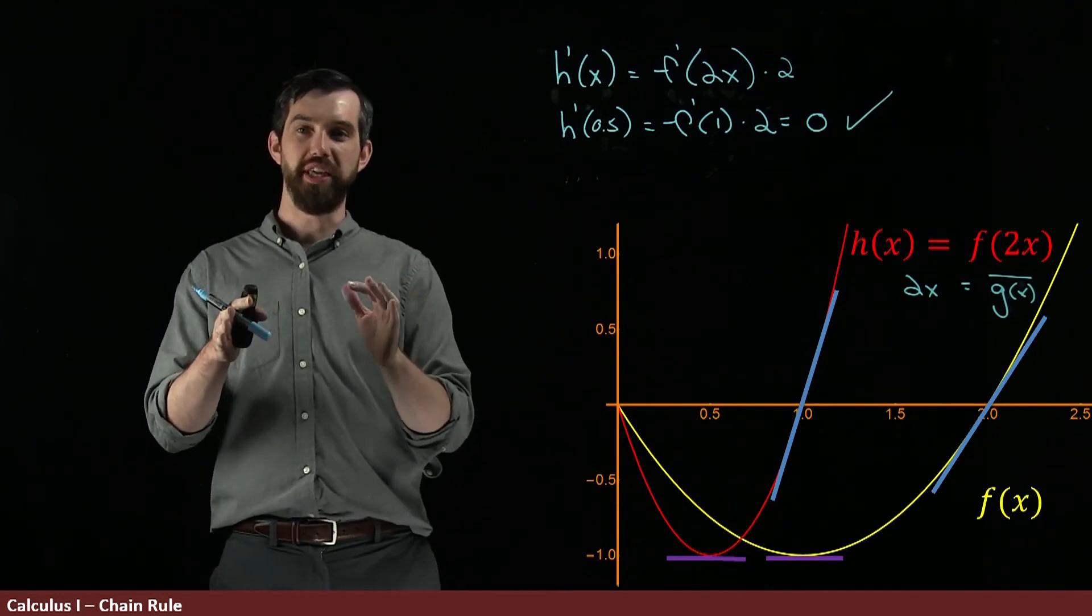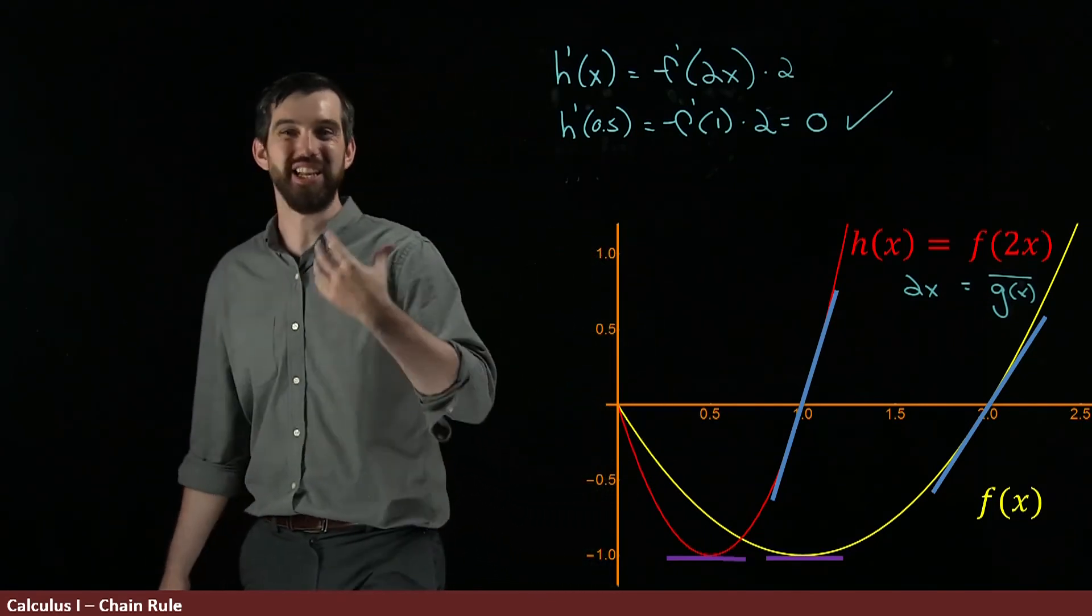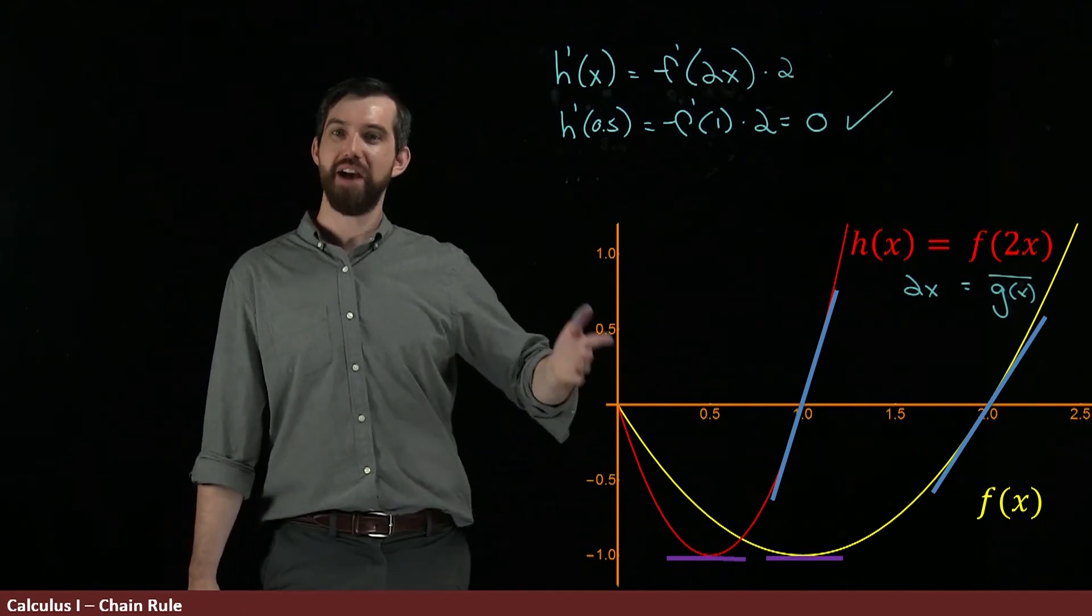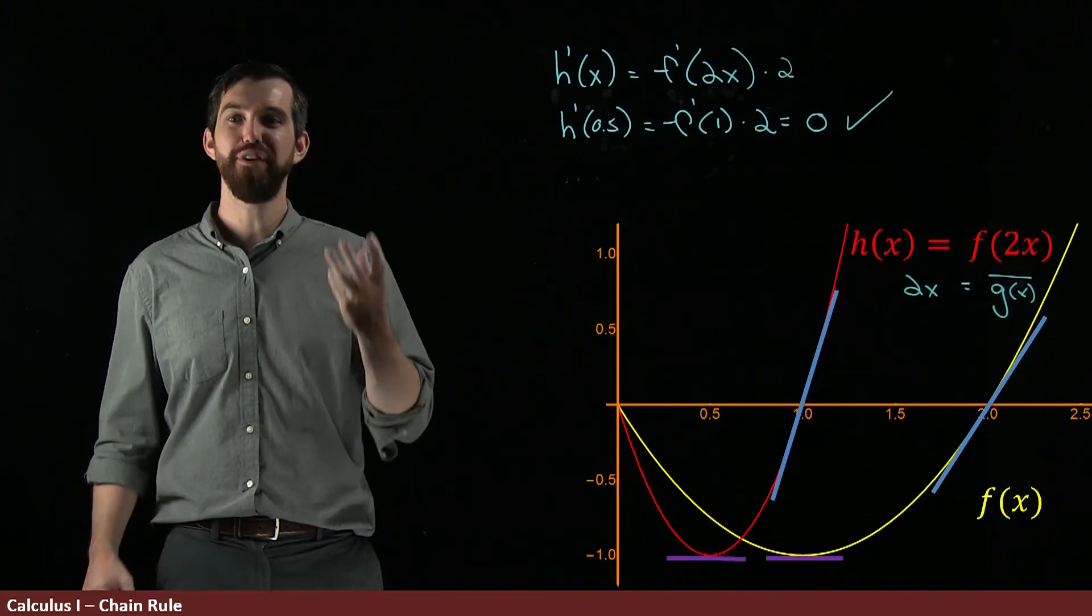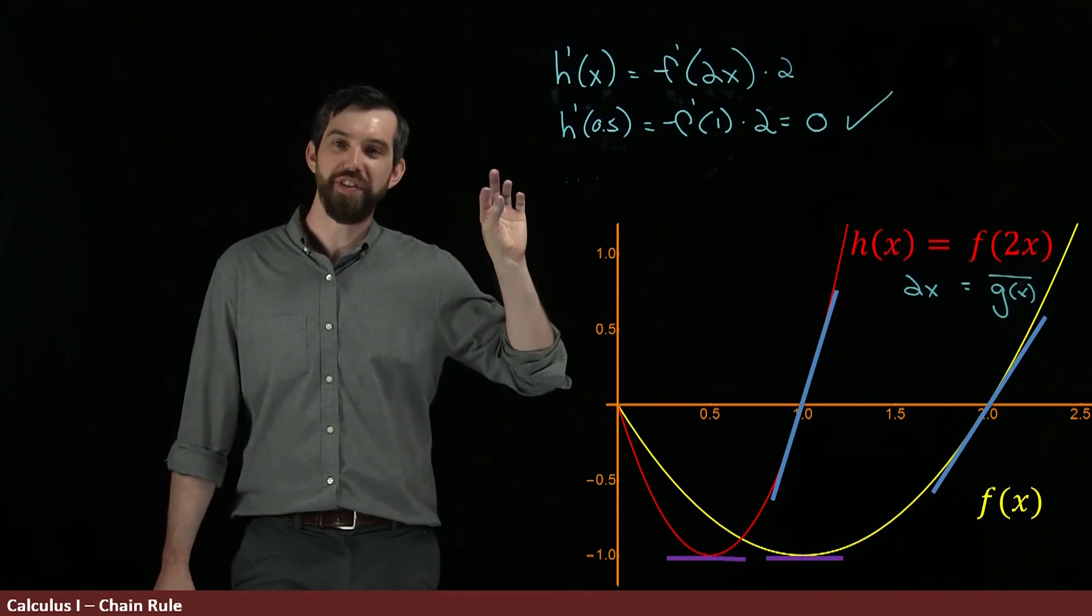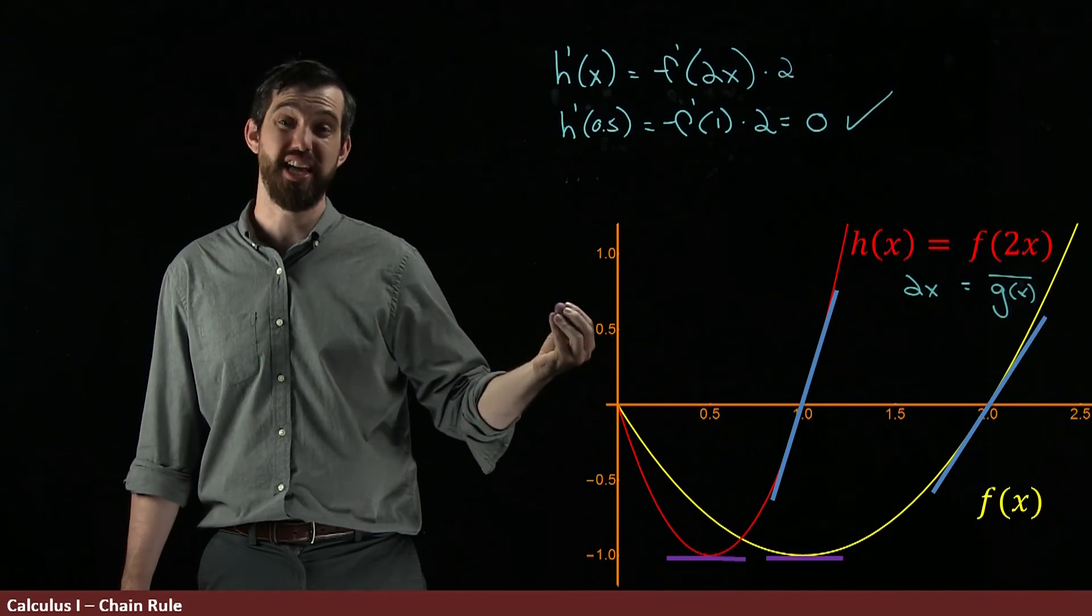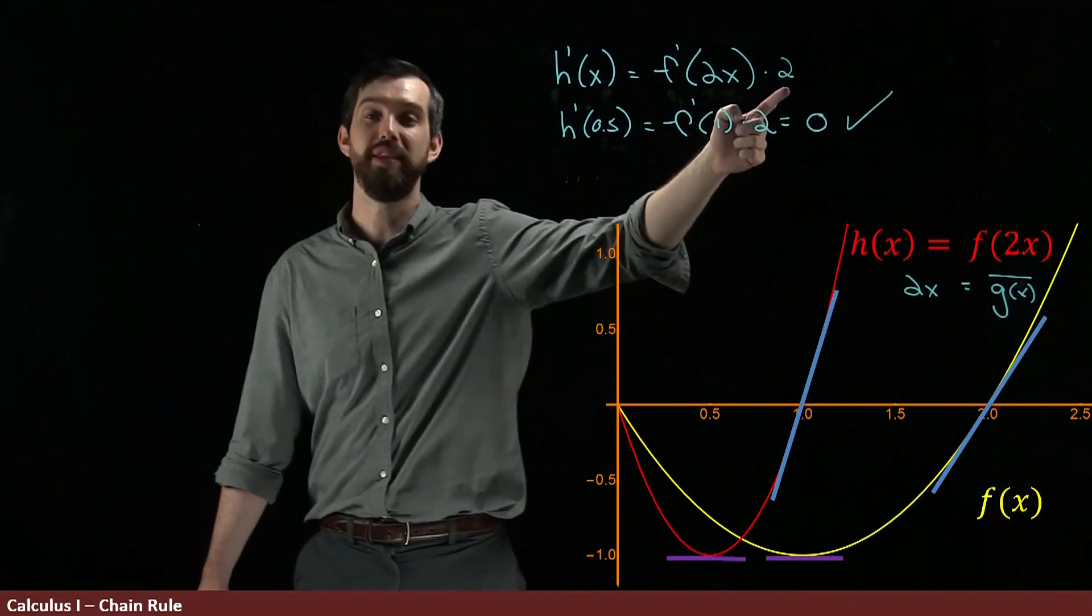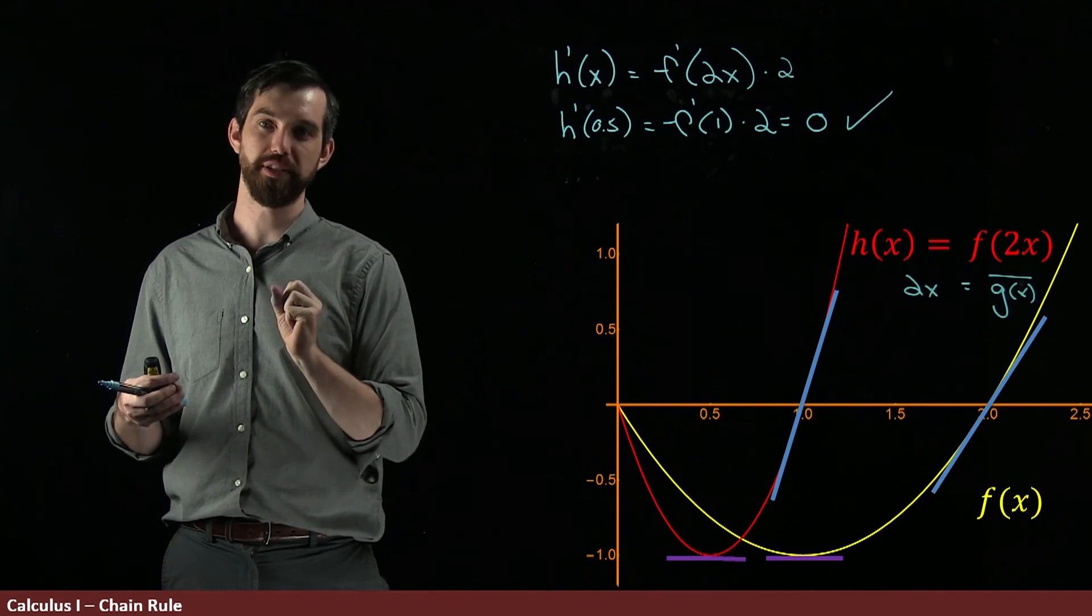Now, this is admittedly a relatively straightforward example only because the inside function, the g of x, is equal to 2x, which is a relatively simple function. But if I had a really complicated f and a really complicated g, the same idea sort of works, which is that to figure out the derivative of a composition, you look to the derivative of the outside function, evaluate it at wherever the inside function is going to take you, but then you multiply by this sort of modulating factor, the 2 in this case, or generically the derivative of the inside. And so you have this product of these two different things.